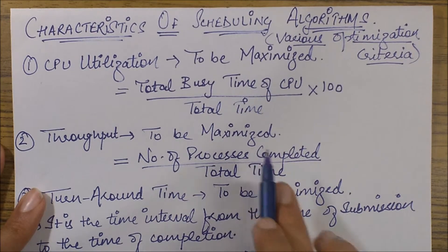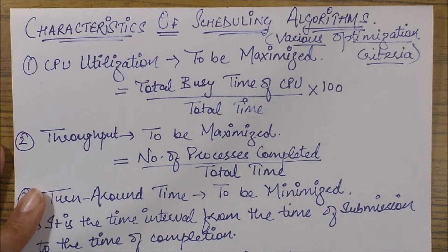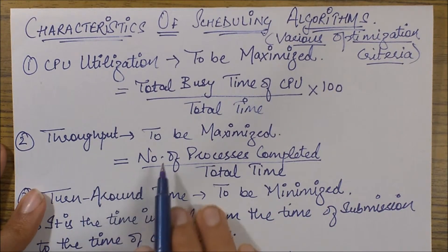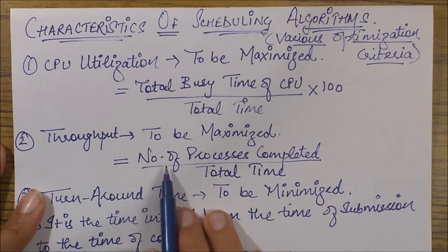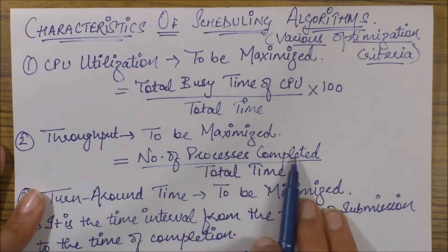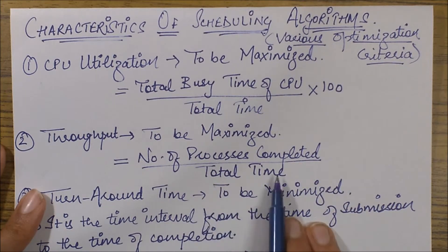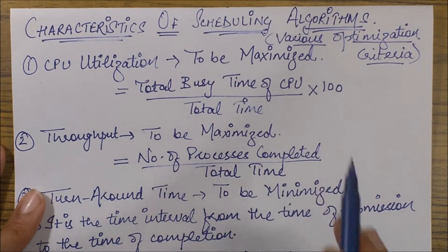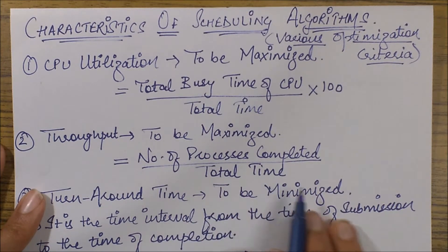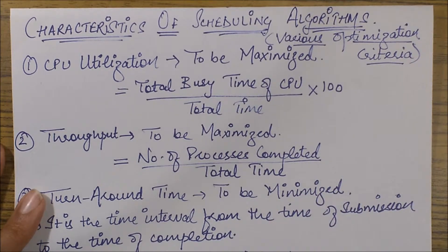Next is throughput, which also needs to be maximized. It is defined as the total number of processes completed per unit time — that is, the total number of processes completed divided by the total time. We can also describe it as the rate of completion of processes.